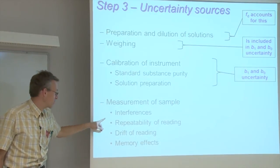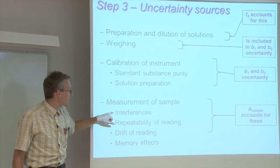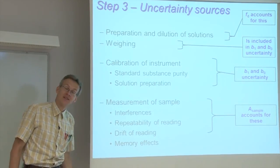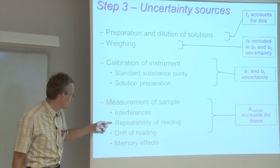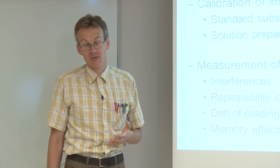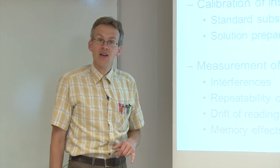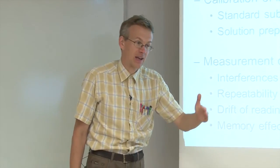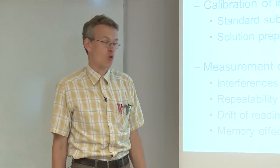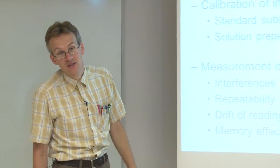Finally, the measurement of the sample itself — meaning the photometric measurement with the sample solution. There can be interferences from other components in the sample that also absorb radiation, thereby giving increased results. The repeatability of the reading is of course a factor, meaning that if we measure the same solution absorbance several times, we get slightly different results. And finally, drift of the reading: if we measure with some time lag, we can get systematically different results because the properties of the spectrophotometer slightly change over time. All these effects are taken into account by the input quantity A_sample, the sample absorbance.